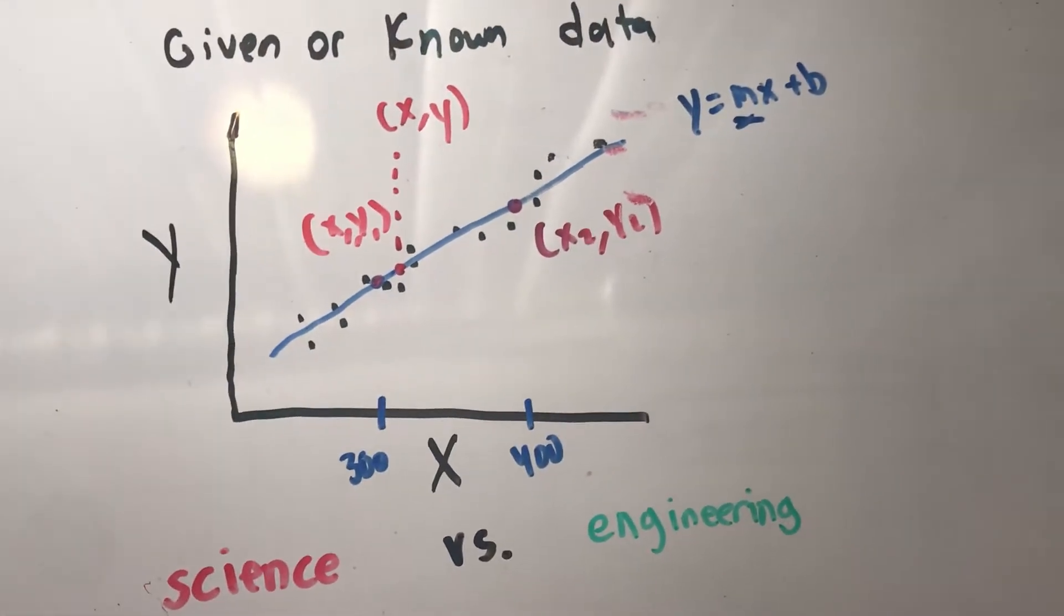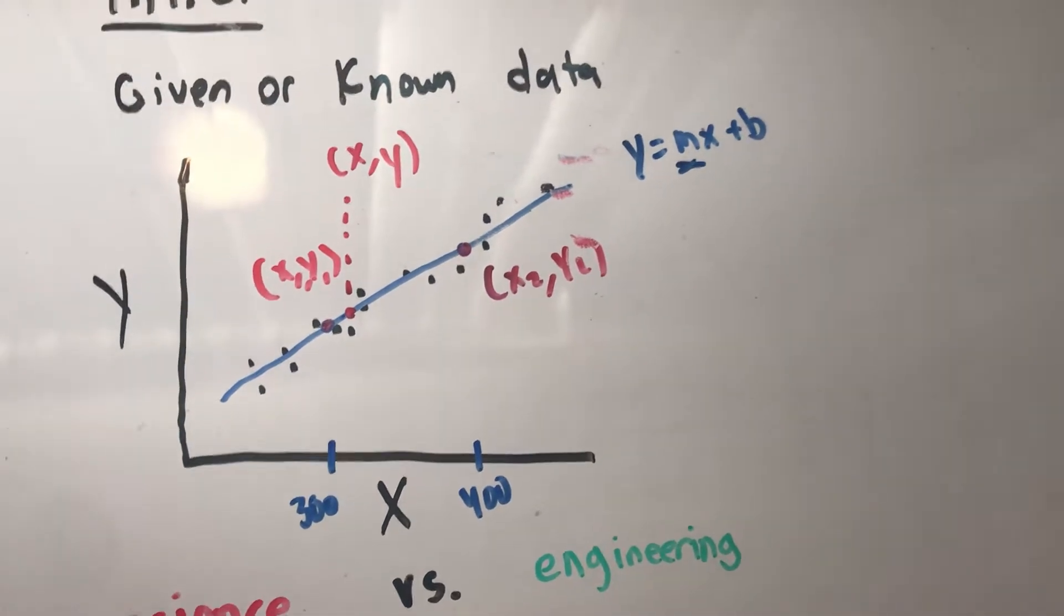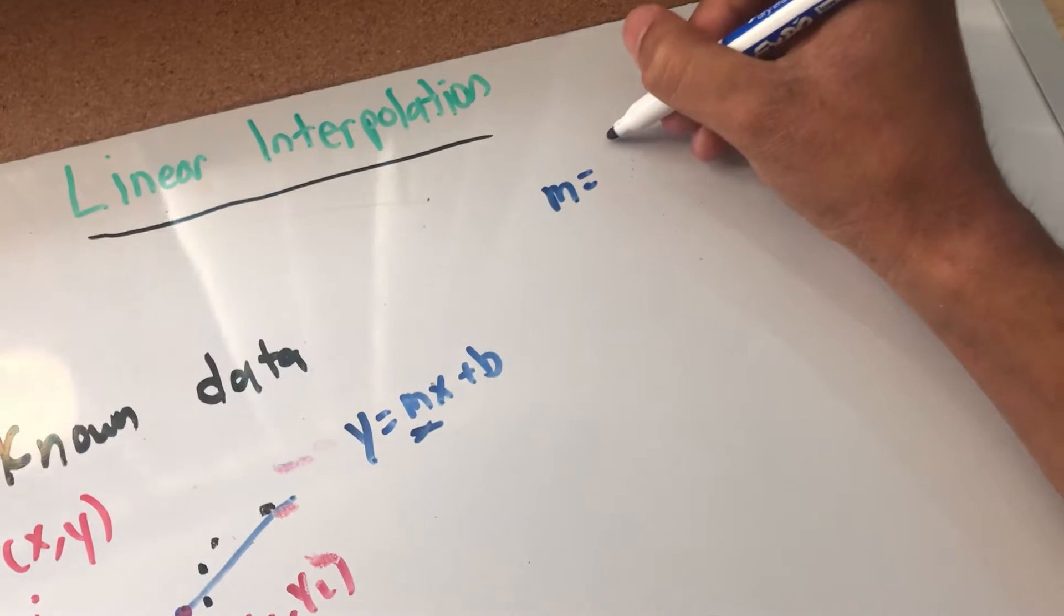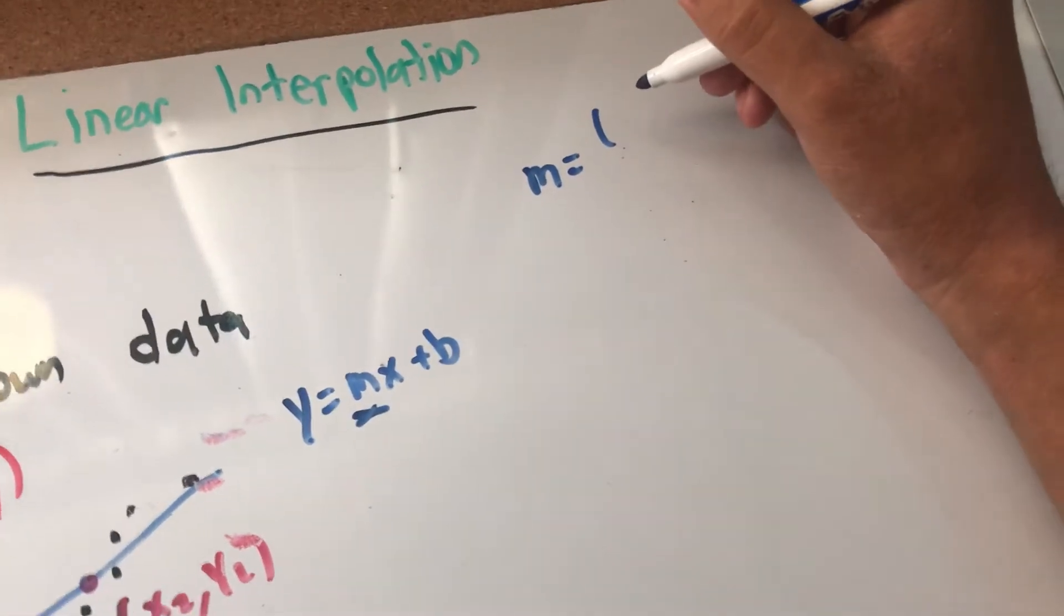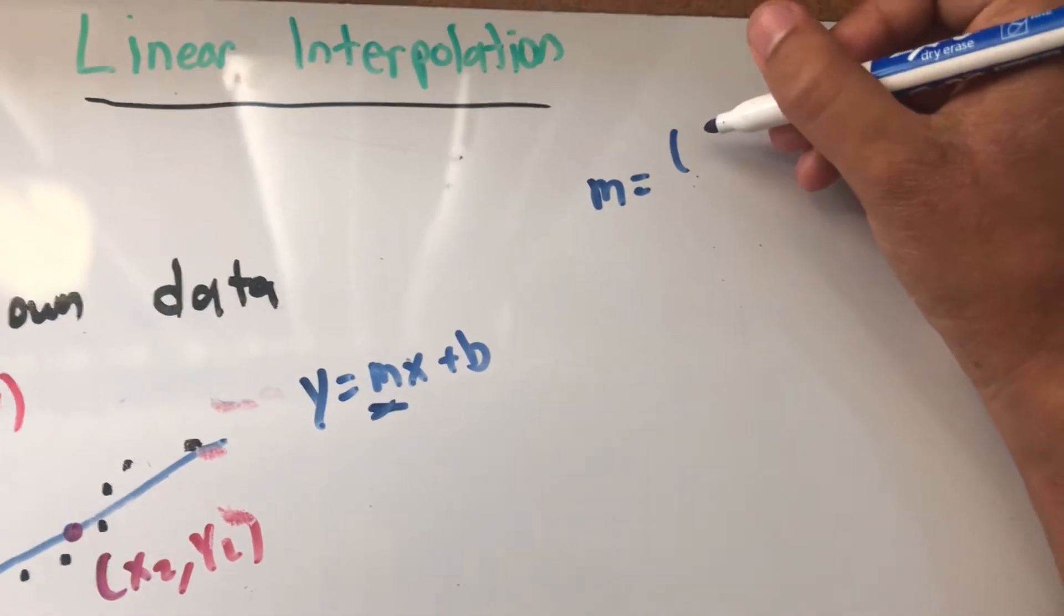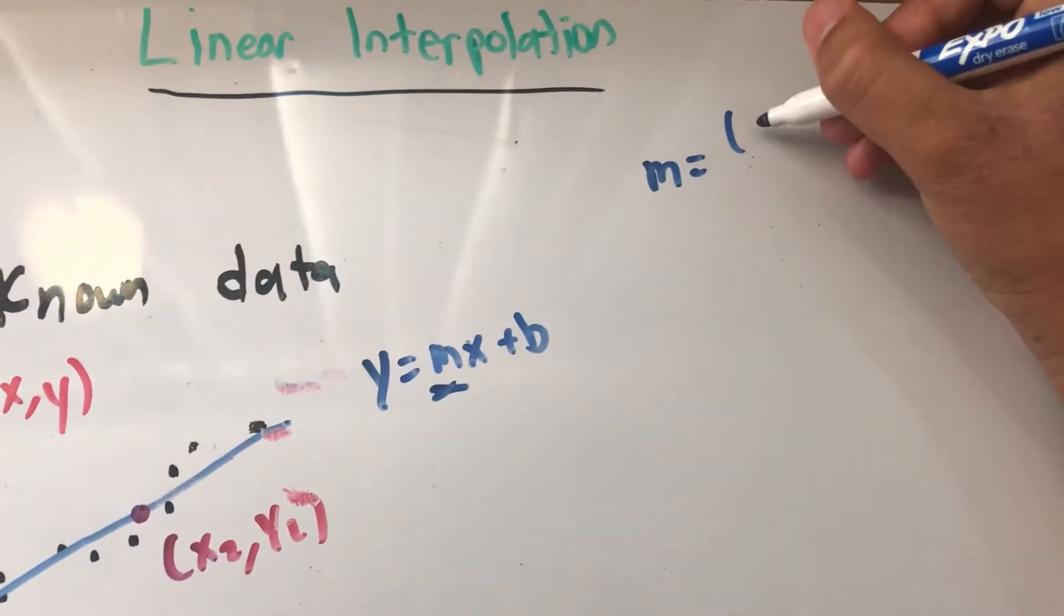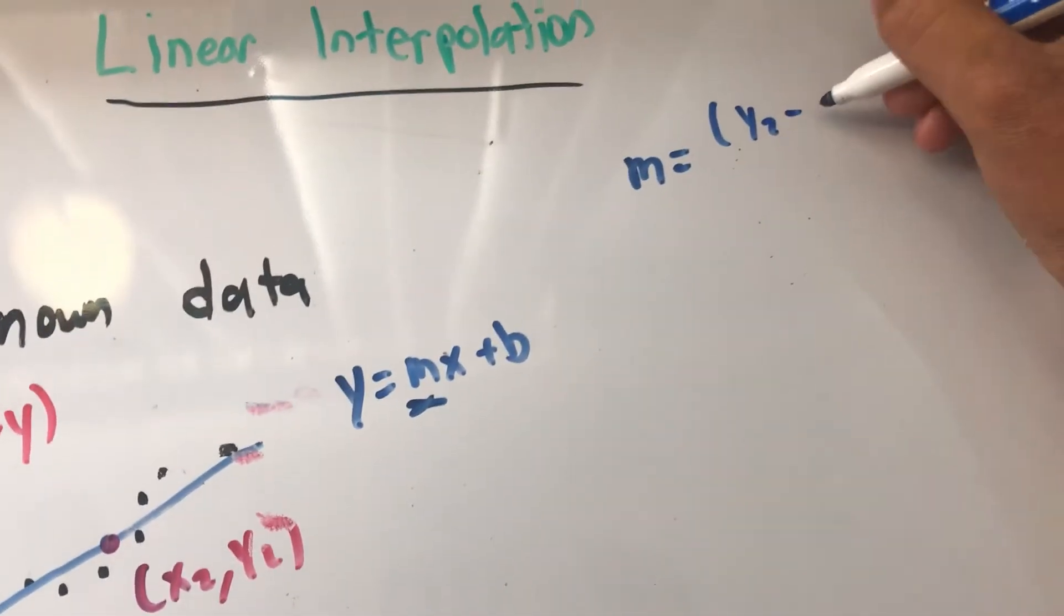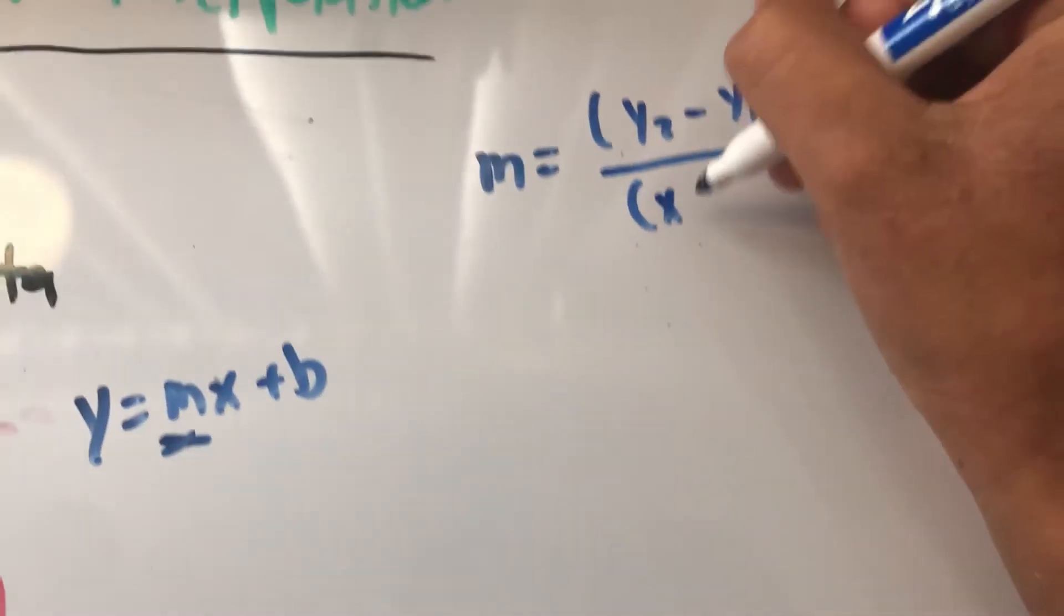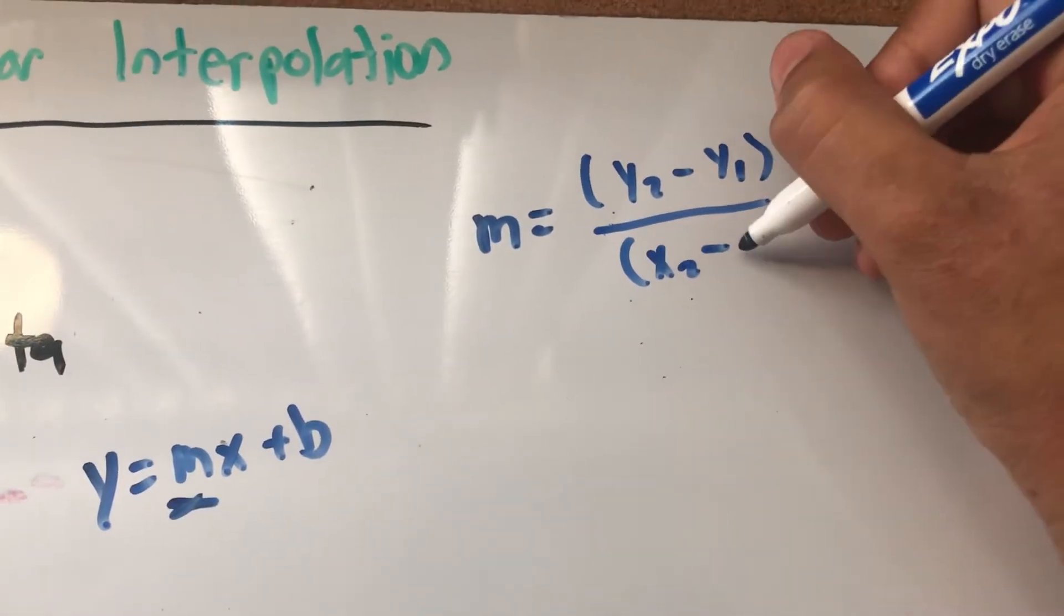So how are we going to get that? We can write some relationships between slope. Remember, slope is rise over run. We can say that y2 minus y1 over x2 minus x1 is one slope.